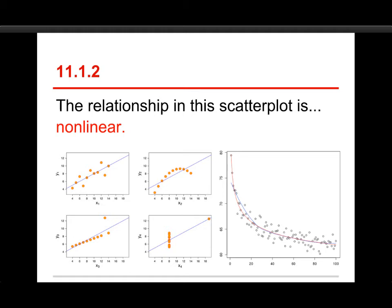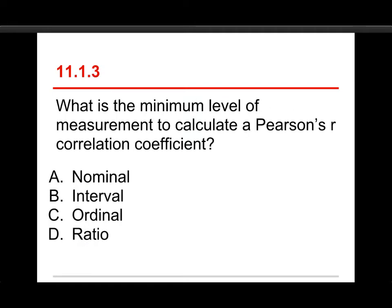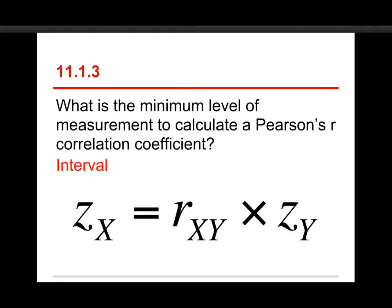It's only the top left one that fits the assumptions of the standard regression model. The top right one has a very clean, pronounced curve. And the bottom two have issues with outliers and funky distribution. All right, number three. What is the minimum level of measurement to calculate a Pearson's R correlation coefficient? Choices are nominal, interval, ordinal, and ratio. The answer is interval.